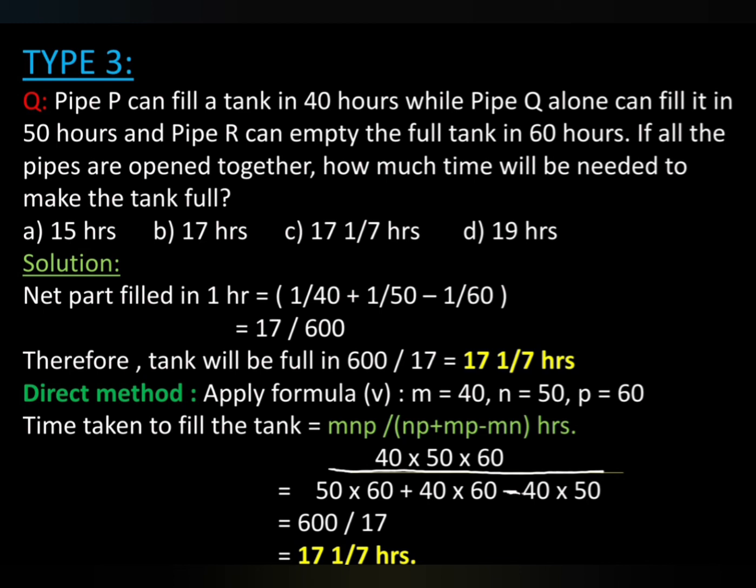Type 3: Pipe P can fill a tank in 40 hours while Pipe Q alone can fill it in 50 hours and Pipe R can empty the full tank in 60 hours. If all the pipes are opened together, how much time will be needed to make the tank full? Options: 15 hours, 17 hours, 17 and 1 by 7 hours, and 19 hours.